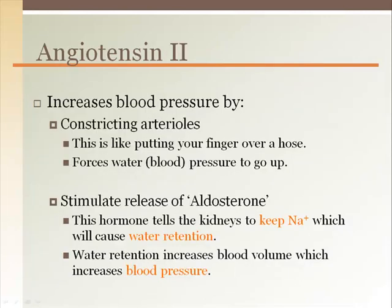Angiotensin 2 increases blood pressure in two ways. It targets the tunica media of arterioles to cause constriction and stimulates the release of aldosterone from the adrenal gland. So angiotensin 2 directly increases pressure by vasoconstriction and indirectly by the actions of aldosterone, which increases blood volume.